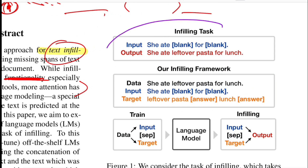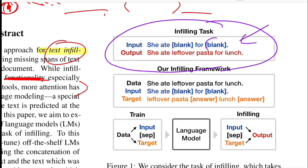Let's look at the input and output of the infilling task. If the input is 'she ate blank for blank,' the blank token represents something the model has to fill. The expected output is 'she ate leftover pasta' — that's the first blank — 'for lunch,' where lunch is the second blank.